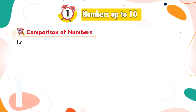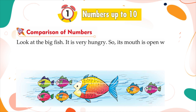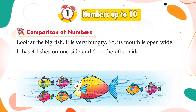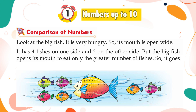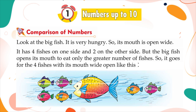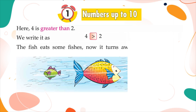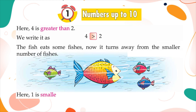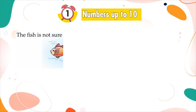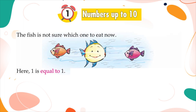Comparison of numbers. Look at the big fish — it is very hungry, so its mouth is open wide. It has four fishes on one side and two on the other side. The big fish opens its mouth to eat only the greater number of fishes, so it goes for the four fishes. Here, four is greater than two. We write it as four greater than two. The fish eats some fishes. Now it turns away from the smaller number. Here, one is smaller than two. We write it as one smaller than two. When the numbers are equal, one is equal to one. We write it as one is equal to one.